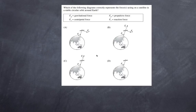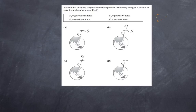The thing about gravity is to understand that a satellite going around the earth undergoes centripetal motion and experiences centripetal forces. Those centripetal forces are provided by the gravitational force — in other words, Fc is actually equal to Fg — and these are the only forces acting on the satellite.